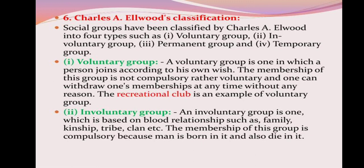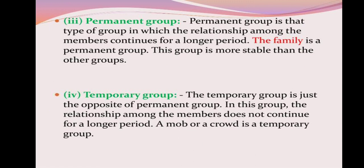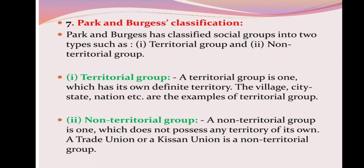Another classification includes voluntary group, involuntary group, permanent group, and temporary group. A voluntary group is one which a person joins according to his own will. An involuntary group is based on birth relationships such as family and kinship. A permanent group is one in which relationships among members continue for a longer period; a temporary group is the opposite. Parker and Berger's classification divides groups into territorial group and non-territorial group. A territorial group has its own definite territory — village, city, state, and nation are examples. A non-territorial group does not possess any territory — a trade union or a Kisan union is an example.